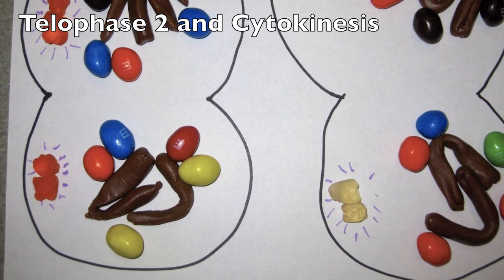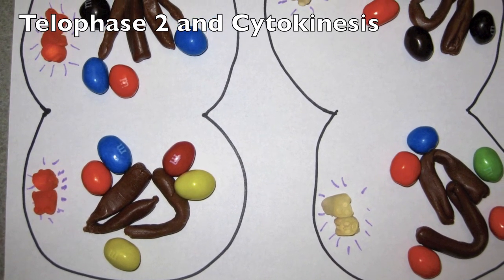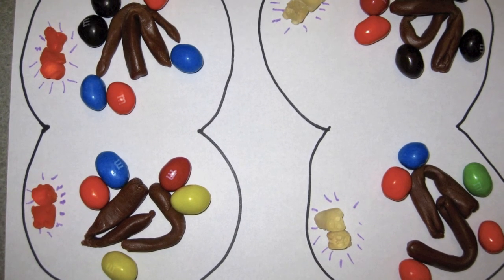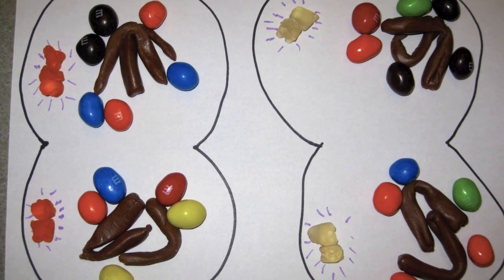In telophase II, nuclei form and chromosomes decondense, and cytokinesis starts again in animal cells by a cleavage furrow.